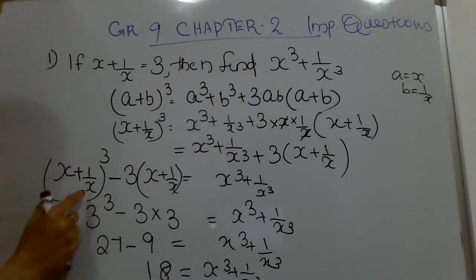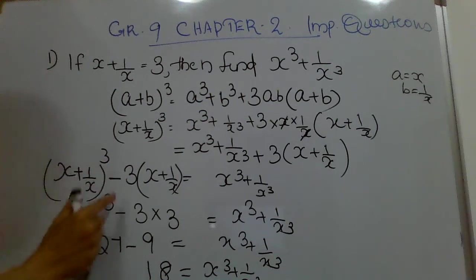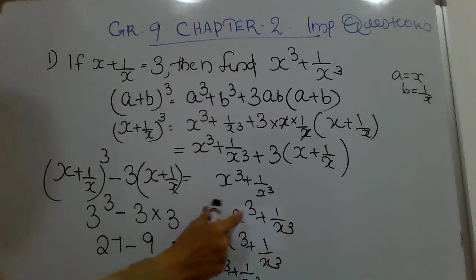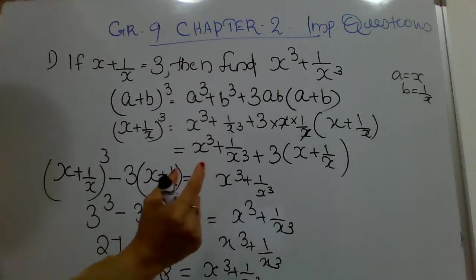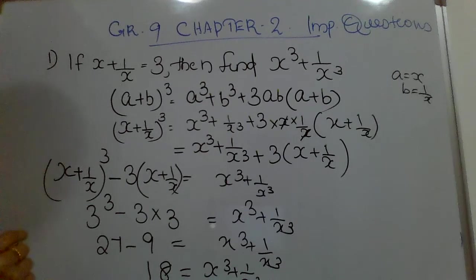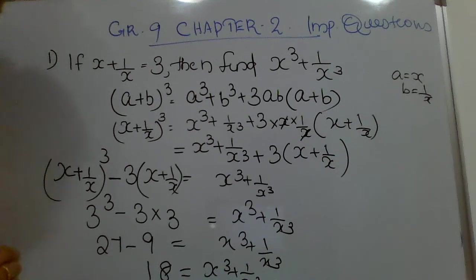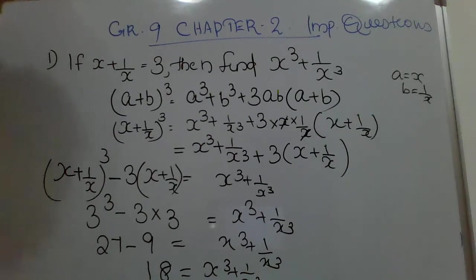Substituting (x + 1/x)³ = 3³, we get 3³ minus 3 × 3 = x³ + 1/x³. Simplifying, x³ + 1/x³ = 18. If you understood the concept and enjoyed the class, please press the like button. Thank you very much.